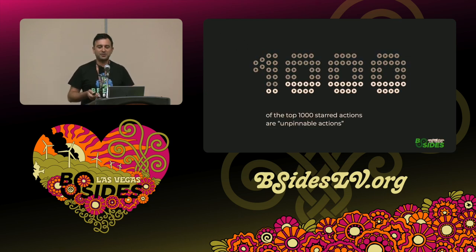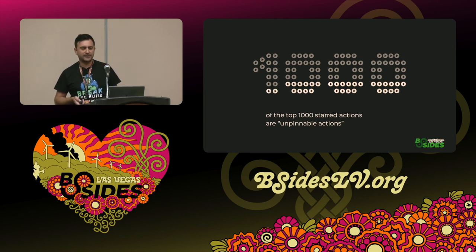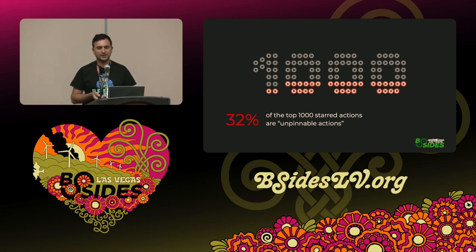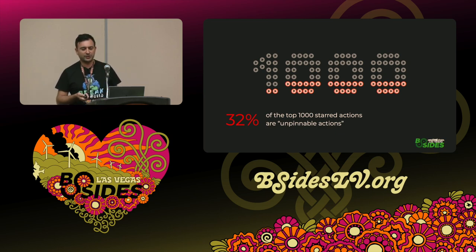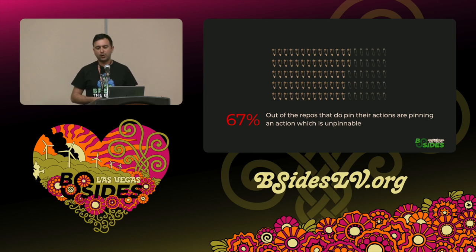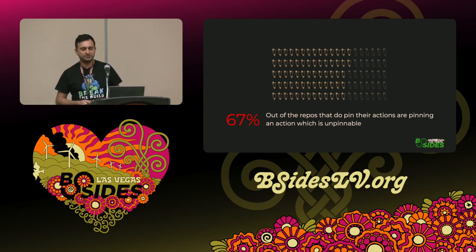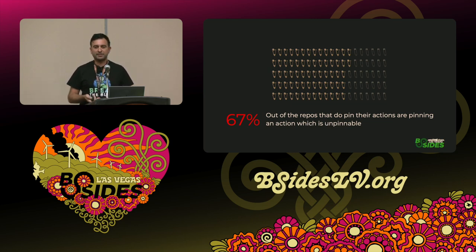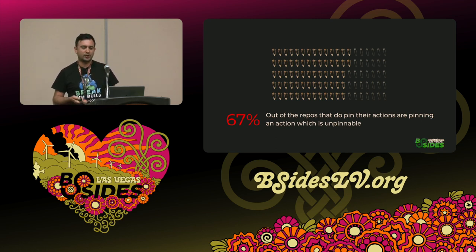I love numbers, so I took 1,000 actions — again, the top-starred actions from the marketplace — and found out that 32% of them are actually unpinnable. And it's not surprising to see that 67% of the workflows that do follow the pinning directions have done the heavy lifting of calculating the commit hash but are pinning against an unpinnable action. That's an insane number — basically a lot of workflows out there can be compromised.